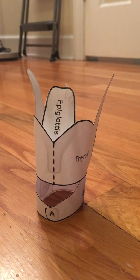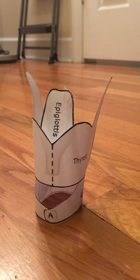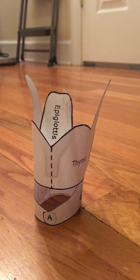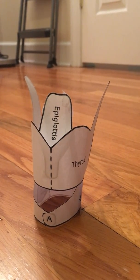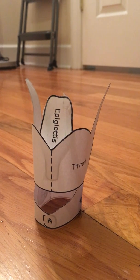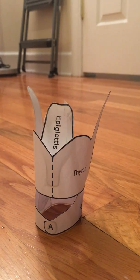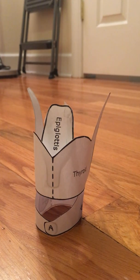Here is a model of the larynx. We've got four cartilaginous structures to go over. The first is the thyroid, which is the biggest cartilage of the larynx and serves as the anterior attachment to the vocal folds.